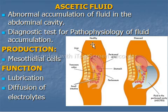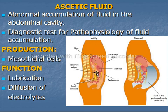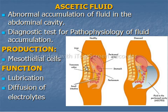Welcome back with another video lecture. In this video lecture the topic under discussion is ascitic fluid. Before starting ascitic fluid we must know about peritoneal fluid. Normally in every healthy individual about 50 ml of fluid are present in the abdominal cavity, which are produced by the mesothelial cells of peritoneum.